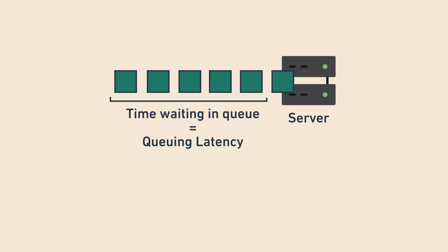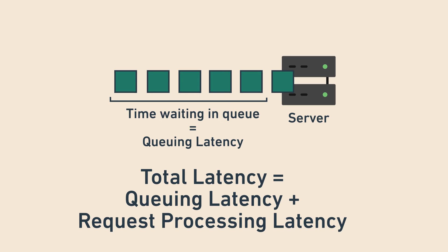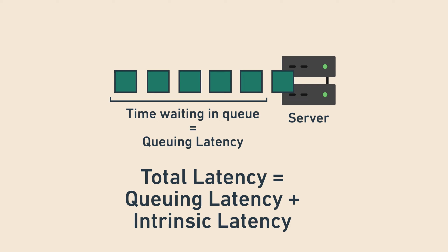This extra waiting is called queuing latency. When a server has no queue, like an ice cream stand with no line, the queuing latency is zero. As the queue builds up, queuing latency increases. So the total latency experienced by a request is queuing latency — the time spent waiting in line — plus request processing latency, the time to actually handle the request. Request processing latency is also known as intrinsic latency because it arises from the request itself, not just from waiting in line. For example, if you've ever waited in a long line just to scan a ticket to get into a concert, you experienced high queuing latency and low intrinsic latency.